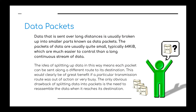So what are data packets? Well, any information — any files that you send over the internet, over a network, if you're sending emails to people — this data is split into smaller sizes. These are called packets and they're typically around about 64 kibibytes. In this way it's much easier to control and it should arrive at its destination a lot quicker. Each packet can be sent along a different route to its destination, which is clearly a great benefit if a particular transmission route was out of action or very busy. The only obvious drawback is the need to reassemble the data and make sure it's the same as what was sent once the receiver receives it.